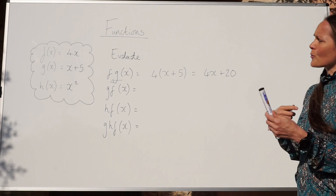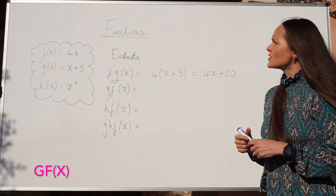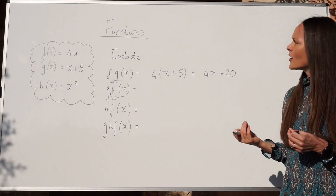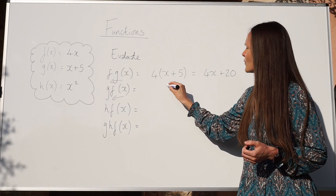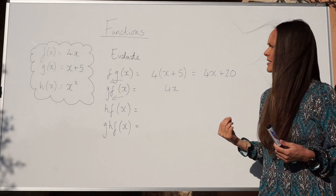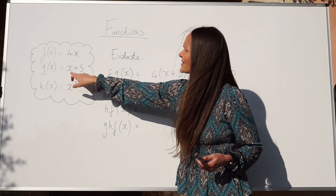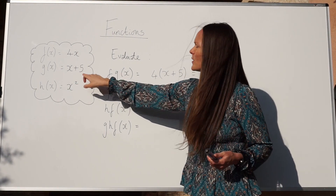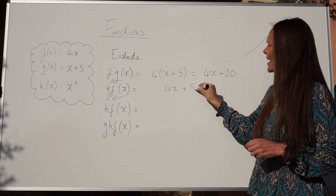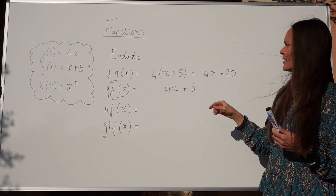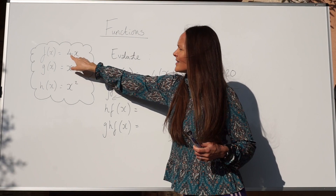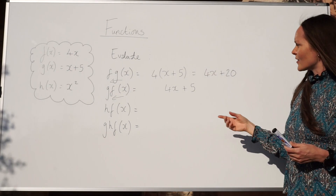For the next one, we have to find g f of x — the other way around. This time, start by writing down the function f of x, which is 4x. Then look to see what's happening to x in g of x: we've got x and then we're adding 5. So all we need to do is add 5 to 4x, giving us 4x plus 5.